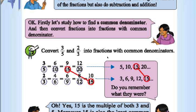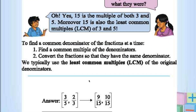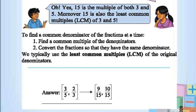Convert 3 by 5 and 2 by 3 into fractions with a common denominator. Multiply 3 by 5 with 3 — it becomes 9 by 15. And 2 by 3 by 5 — it becomes 10 by 15. 10 by 15 is greater, so 2 by 3 is better than 3 by 5. 15 is the common multiple of both 3 and 5, and it is also the LCM of 3 and 5. To find the common denominator, find the LCM of the denominators and convert fractions to have the same denominator.